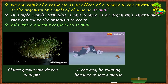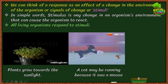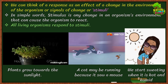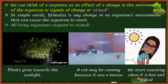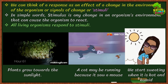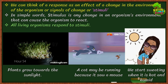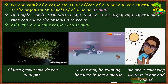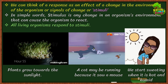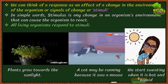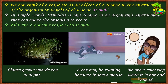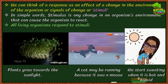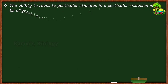A cat may be running because it saw a mouse — for the rat, the cat is the stimulus and running away is the response. Another example: we start sweating when it is hot and humid. Small drops of sweat accumulate on your skin, oozing from the sweat glands. This happens because your body is responding to the stimulus of hot and humid climate. The sweat absorbs heat from your body and evaporates, cooling you down.